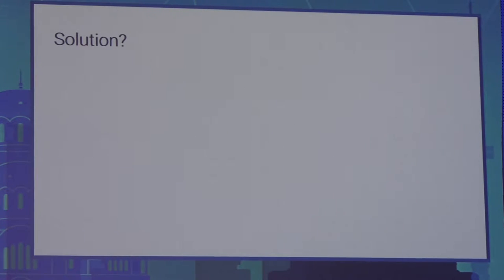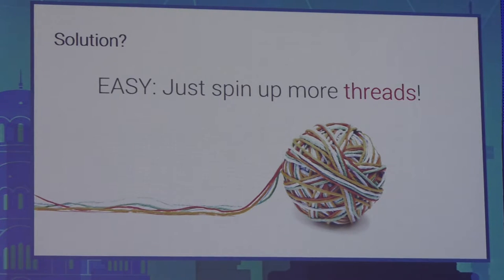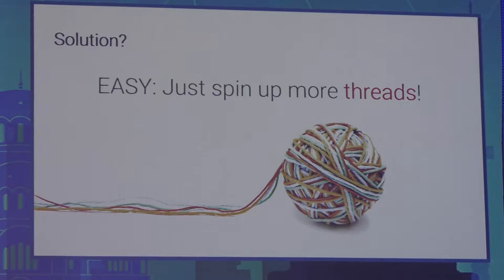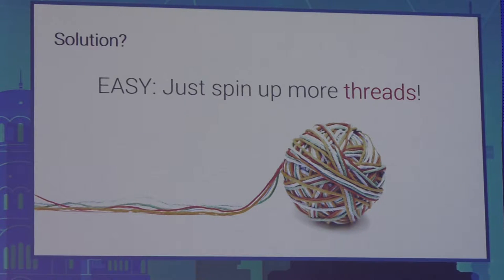As Java developers, we were taught to handle increased load by spinning up more threads. Although many applications work fine with this model, when working with a thread-per-request model you have problems: multi-threaded applications work with shared and synchronized state, they are blocking, they have strong coupling, they are hard to compose, and they use system resources inefficiently.